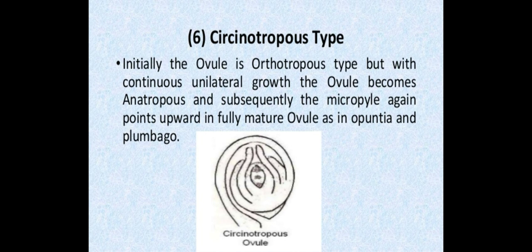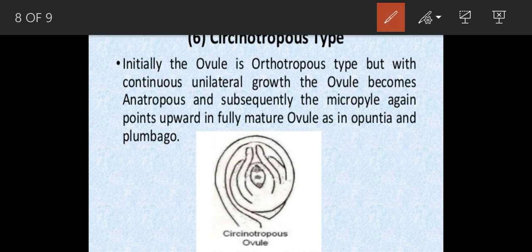The sixth and last type is circinotropous ovule. Here, the complete body of the ovule rotates at a 360-degree angle, so the micropylar end is completely encircled by the body. The funicle is present and the body part completely rotates at 360 degrees, such that the micropylar end turns toward the upper side and the chalazal end is toward the downside. This is common in Opuntia and Plumbago.